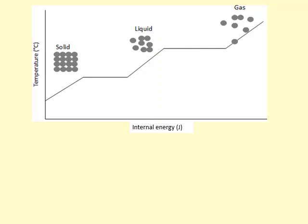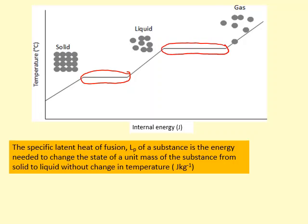If you want to calculate how much energy is required to change the state of a substance - in other words, these stages here without changing the temperature - then we use the specific latent heat. In this case for fusion, it's the energy needed to change the state of a unit mass from solid to liquid without changing the temperature.